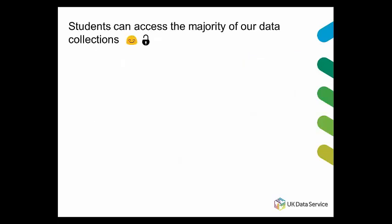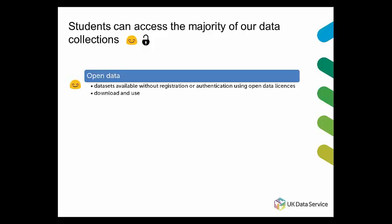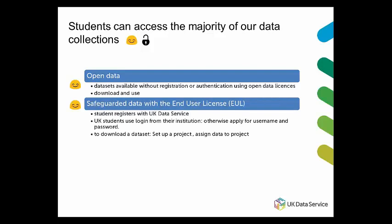When it comes to access, our main message is that students can access the majority of data in our collection for their research projects, but there are different access arrangements and some data cannot be accessed for undergraduate research projects. Some datasets are open and available without registration. A lot of our data is classed as safeguarded and available with an end user licence — still easily accessible but requiring registration. Students and members of staff at UK institutions of higher or further education can register using their institutional username and password.